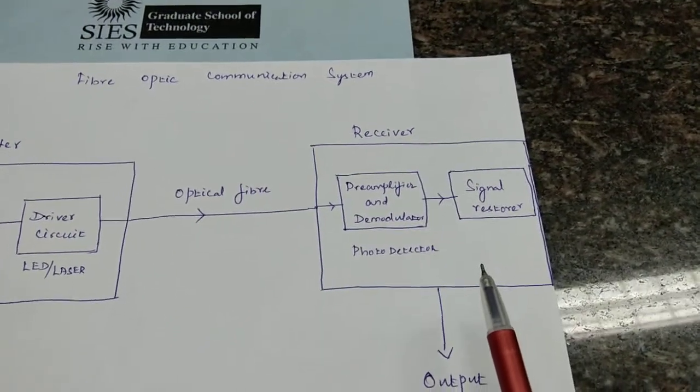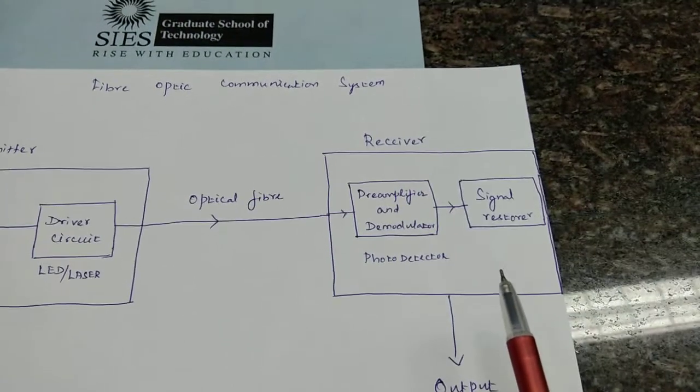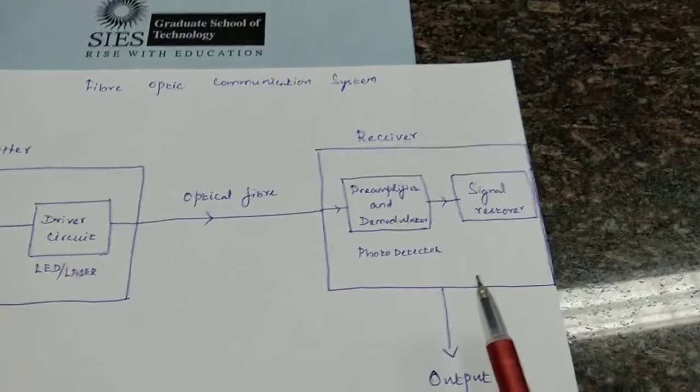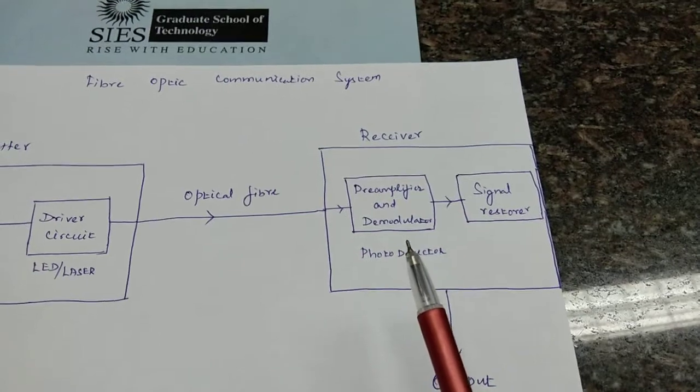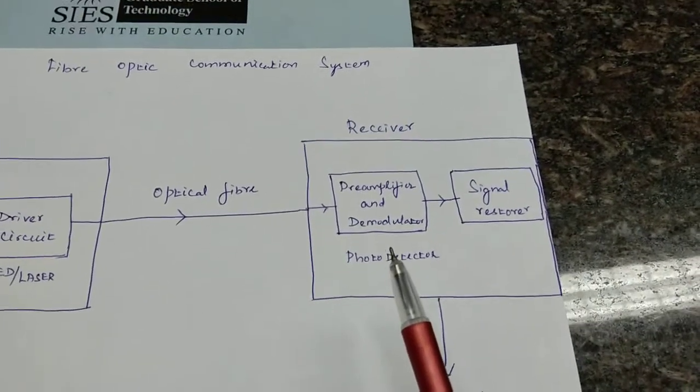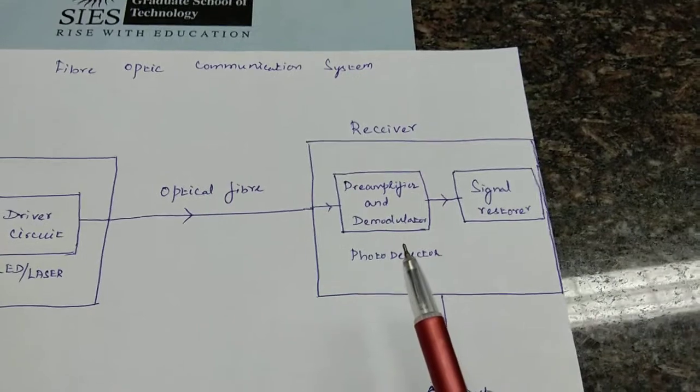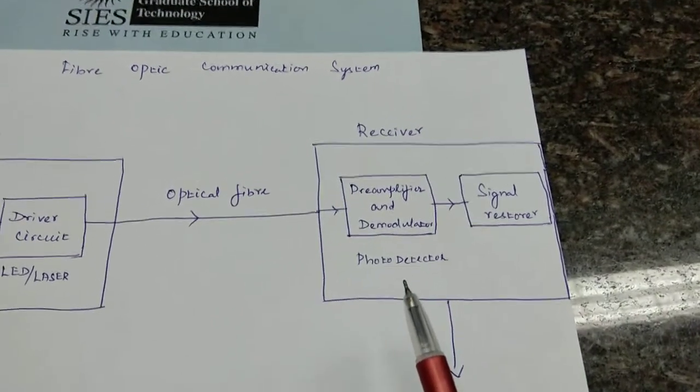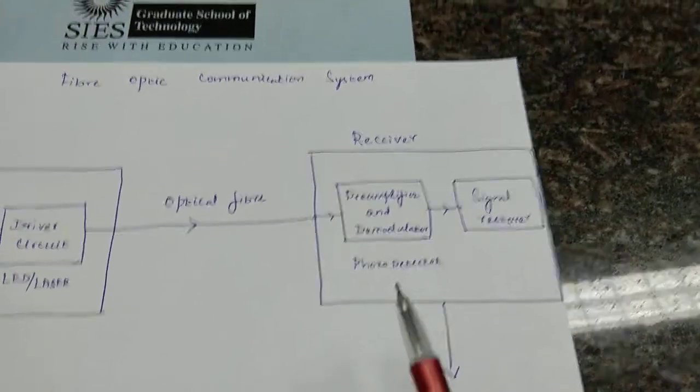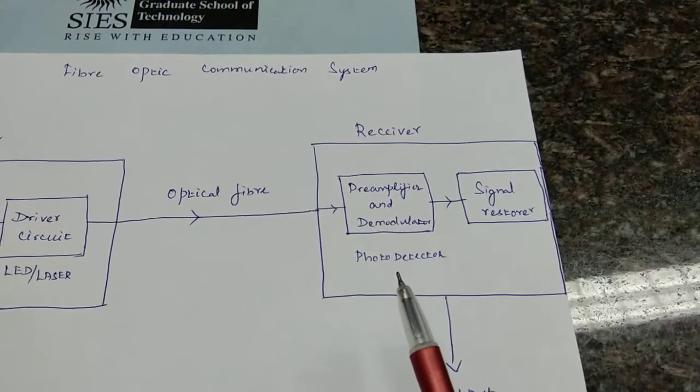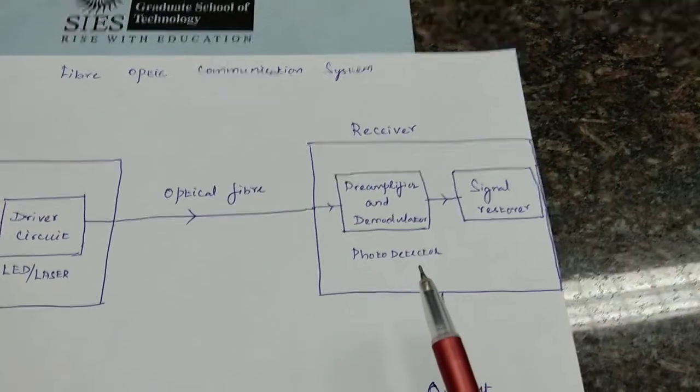At the receiver side, I want the original sound signal back. So if you see this receiver, there are two main parts here. The first one is a preamplifier and a demodulator. We make use of a photo detector here which converts this light signal again into electrical signal.